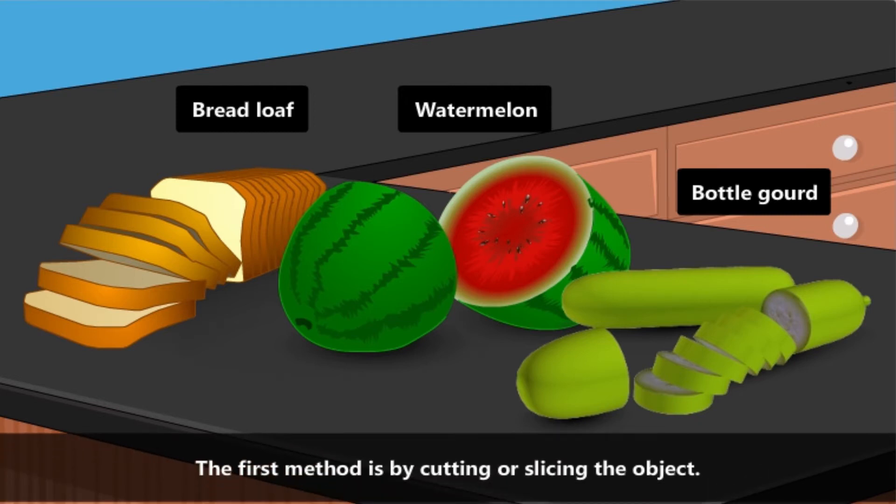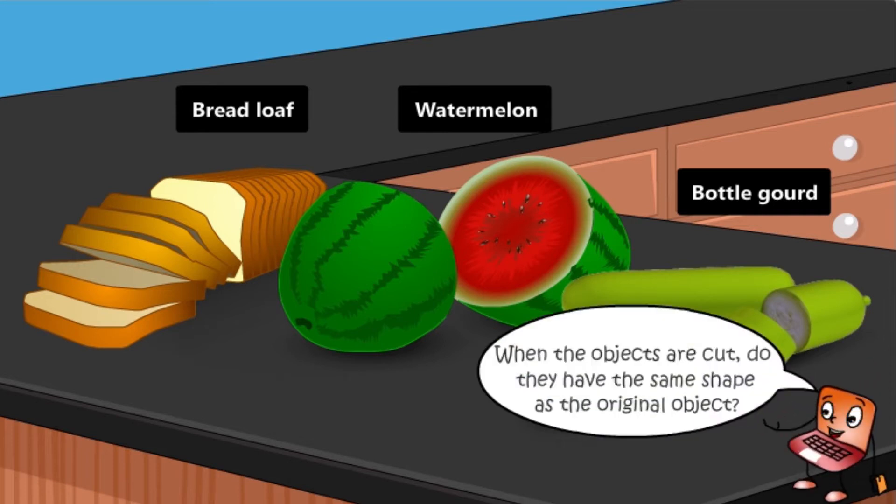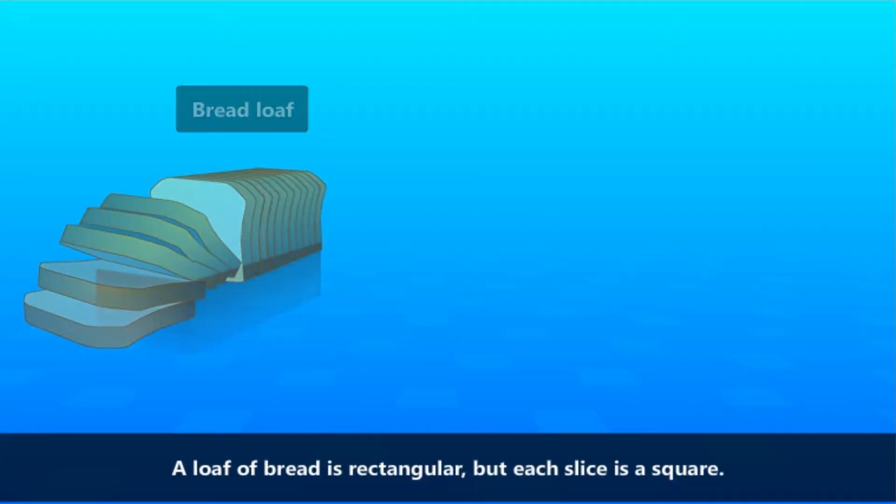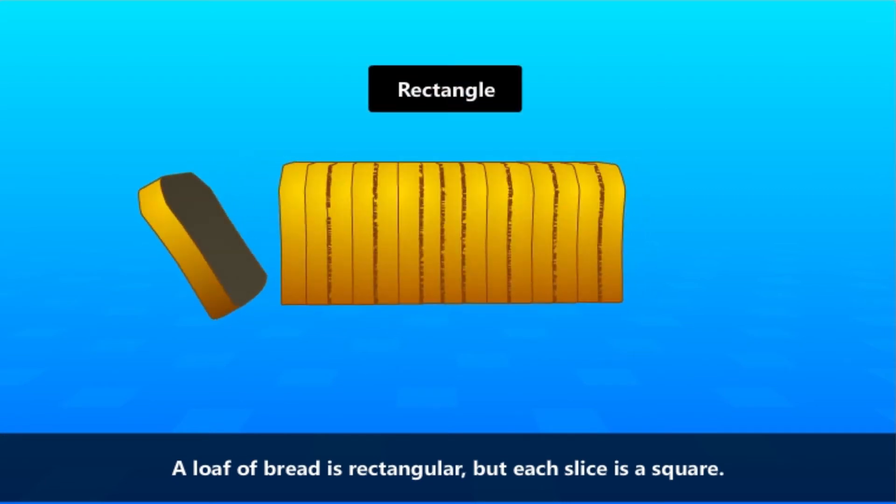The first method is by cutting or slicing the object. You would have often observed your mother slicing bread or cutting vegetables and fruits. When the objects are cut, do they have the same shape as the original object? Let's take a loaf of bread. It is rectangular, but each slice is a square.